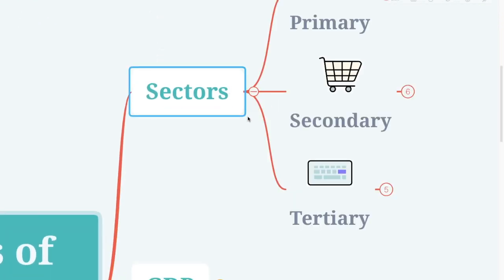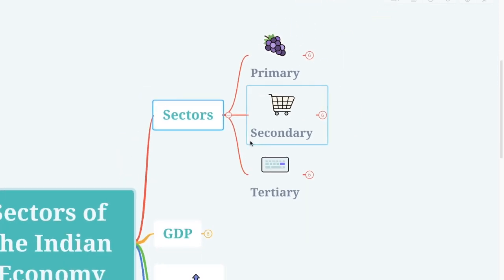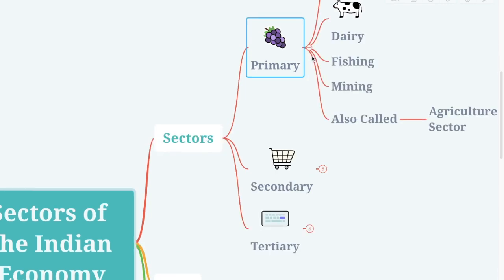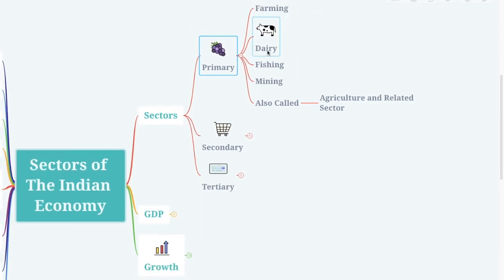First: primary, secondary, and tertiary. Activities such as farming, dairy, fishing, mining, etc. come under the primary sector. The primary sector is also called the agriculture and related sector.